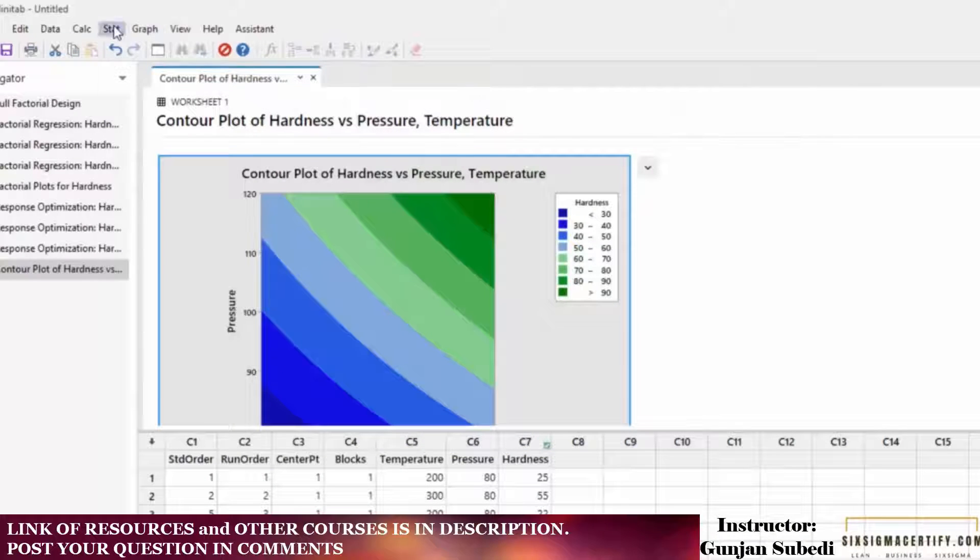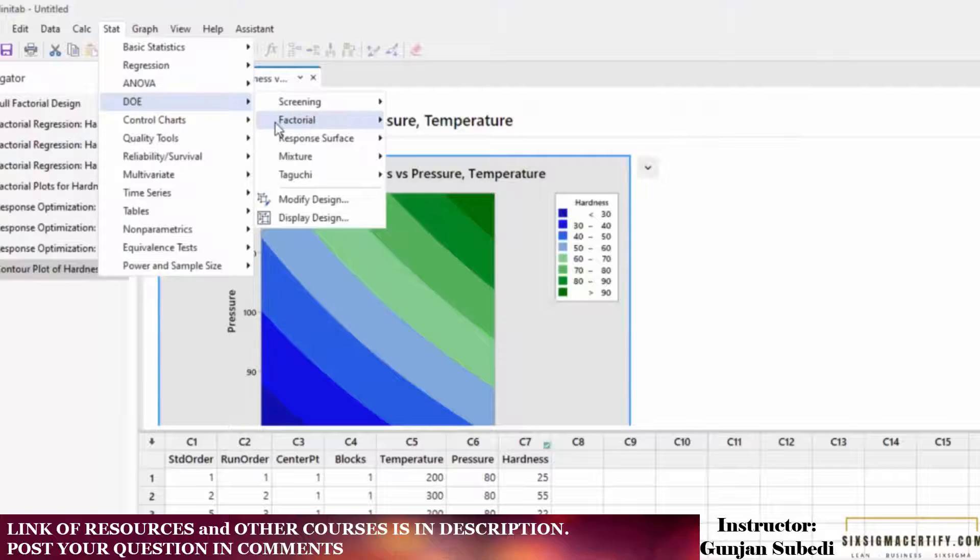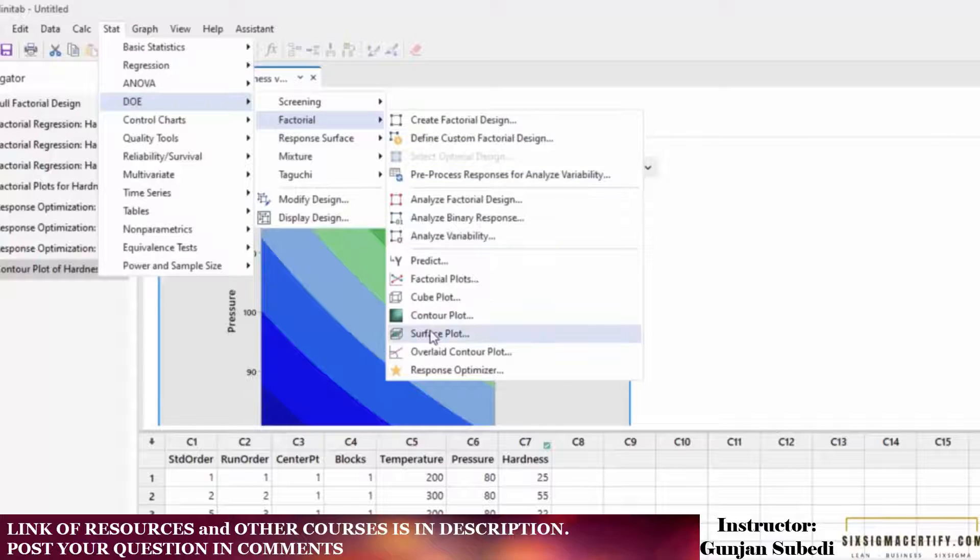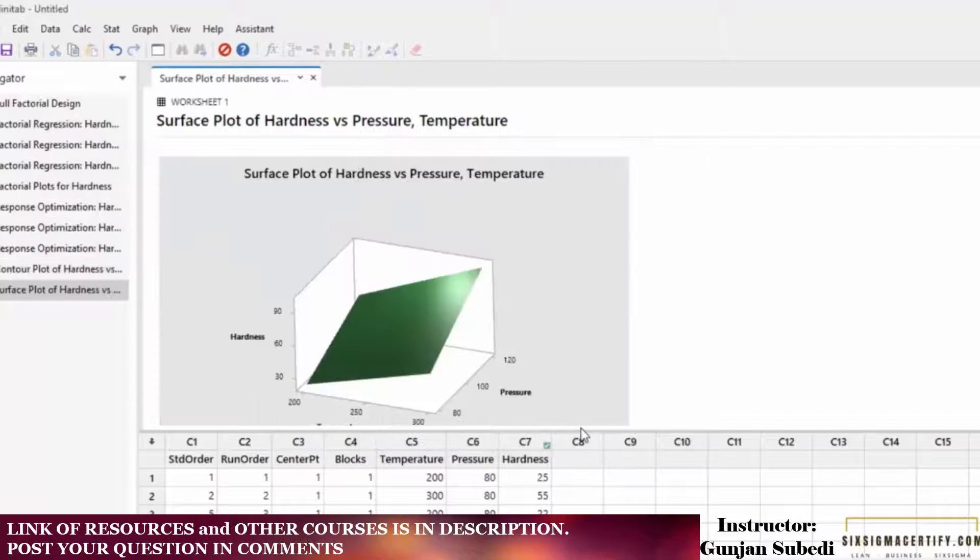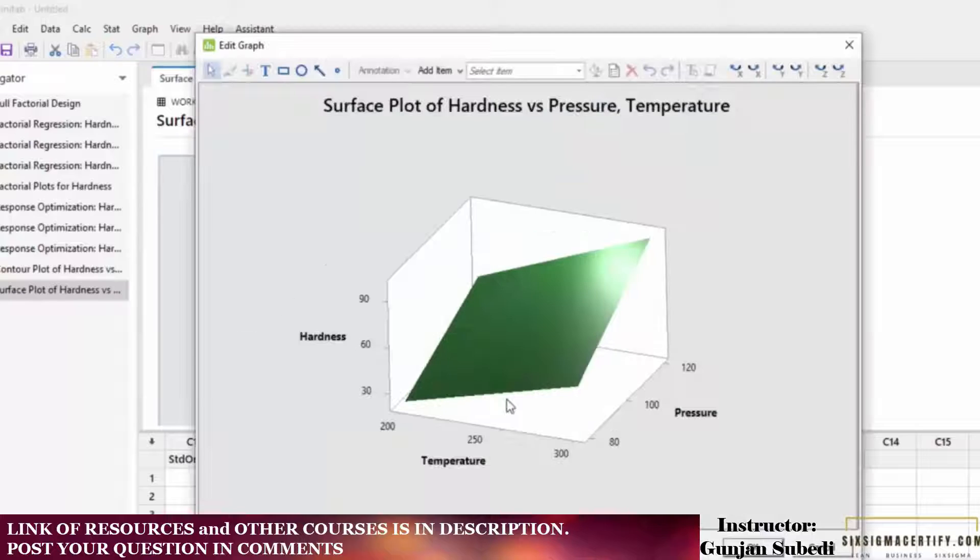Now let us see the surface plot. For that we go to the Design of Experiment, Factorial and click the surface plot. I click here the OK button. It gives me the range of the factors and also the response in the 3D format.